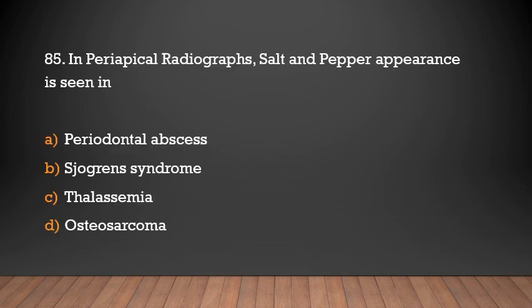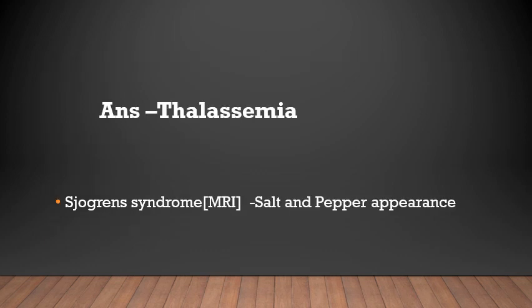In periapical radiographs, salt and pepper appearance is seen in: periodontal axis, Sjogren's syndrome, Thalassemia, Osteosarcoma. Answer: Thalassemia. Salt and pepper appearance is seen in periapical radiographs of Thalassemia, and MRS cancer of Sjogren's syndrome.